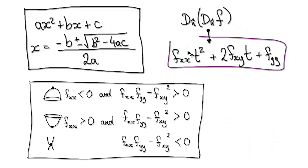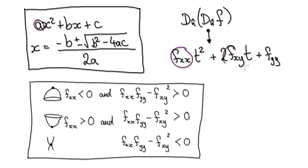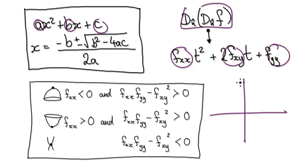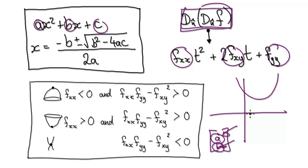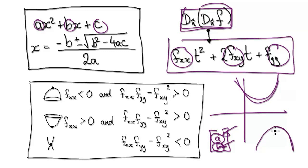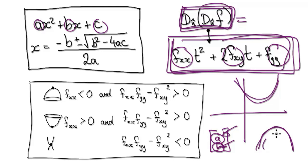It doesn't matter what A and B are (your unit vector components). If the second derivative is always positive, then the concavity is always positive — meaning you're at a local minimum. If this quadratic is always negative, it means it's always concaving downwards, so you know you're at the local maximum.